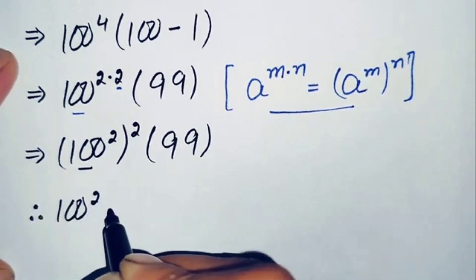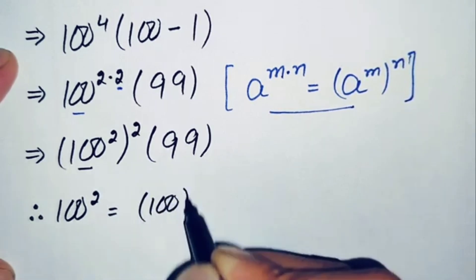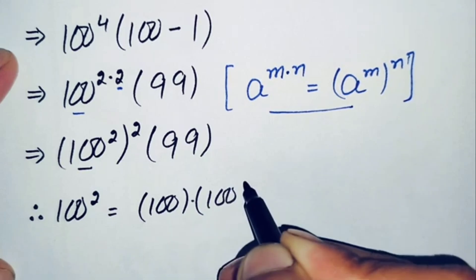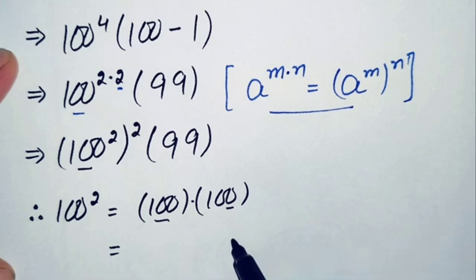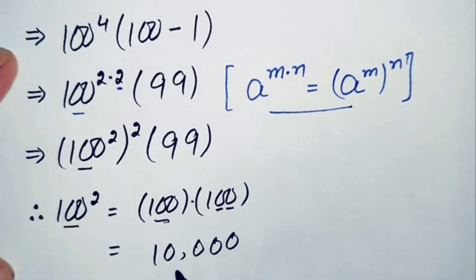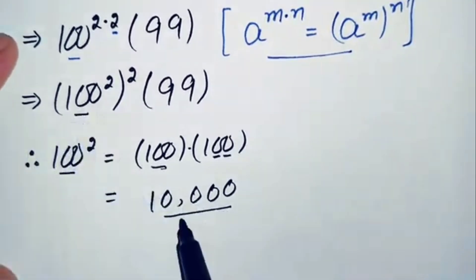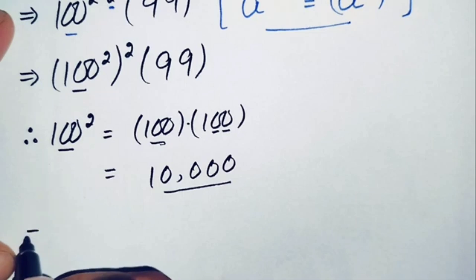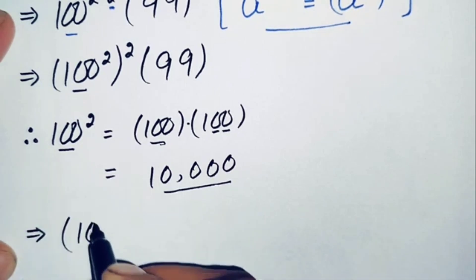100 squared means we multiply 100 two times. It is very simple multiplication: 100 times 0 is 0, 100 times 0 is 0, and 100 times 1 is 100, so this gives us 10,000. The value of 100 squared is 10,000. We replace 100 squared with 10,000, so the equation becomes 10,000 whole squared times 99.